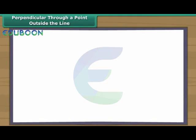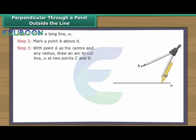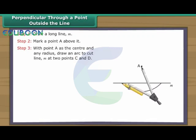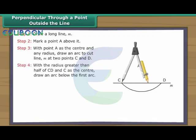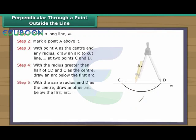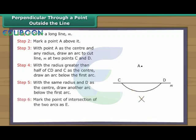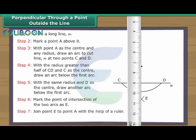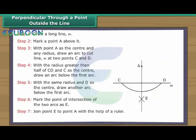Perpendicular through a point outside the line. Draw a long line M. Mark a point A above it. With point A as the centre and any radius, draw an arc to cut line M at two points C and D. With a radius greater than half of CD and C as the centre, draw an arc below the first arc. With the same radius and D as the centre, draw another arc below the first arc. Mark the point of intersection of the two arcs as E. Join point E to point A. AE is perpendicular to line M.